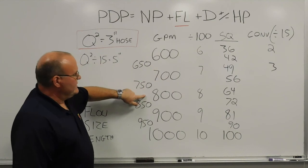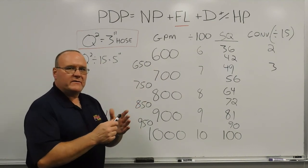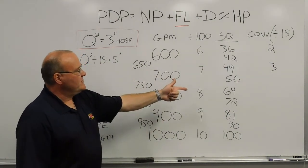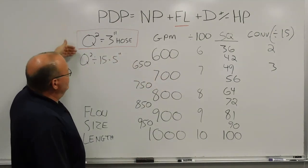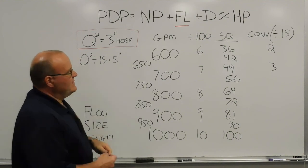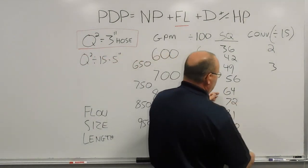For 800 gallons a minute, 600, 700, 800, 8 times 8, there would be 64 pounds of friction loss if it were 3 inch hose, converting that to 5 inch hose divided by 15, you're going to end up with just over 4 pounds of friction loss.